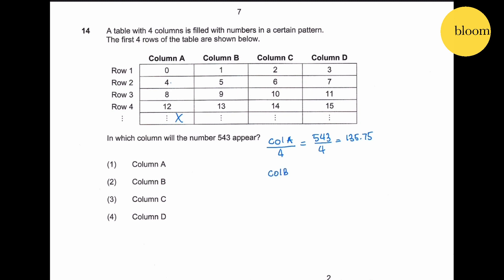Column B cannot be directly divided - we have to minus 1 before it can be divided by 4. Therefore 543 minus 1 divided by 4 gives us 135.5. So like this: 13 minus 1 is 12, can be divided by 4. 9 minus 1 is 8, can be divided by 4. 5 minus 1 is 4, and this is 0.